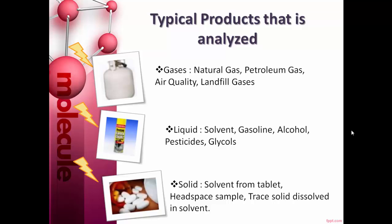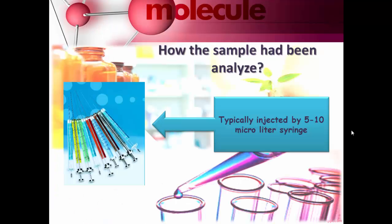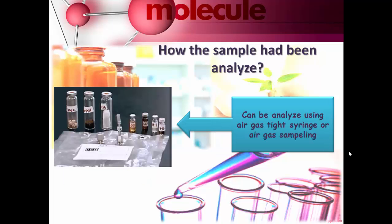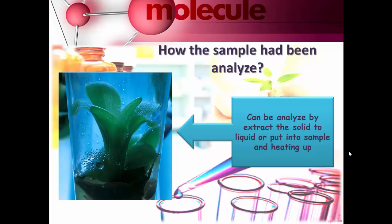These are some typical products analysed using the gas chromatography machine, separated into three types: gases, liquid, and solid. When using gas chromatography to analyse a sample compound, the volume needed is very small — only five to ten microliters. The gases and liquid sample products are injected into the machine using syringes, while solid samples must be extracted and turned to liquid before they can be analysed.